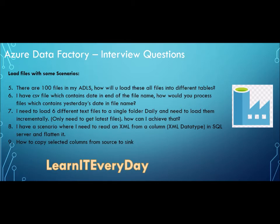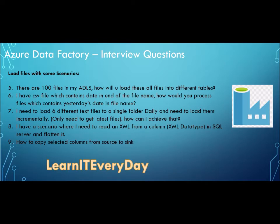I need to load six different text files to a single folder daily, incrementally. This is a very useful use case where you don't want to read everything from your source because the source creates one file every day. If you are dealing with a data lake, you can specify in your dataset that you want to pick files created between certain dates or after a specific date. If I know my job ran successfully two days ago, I'll pick only files created since that date.